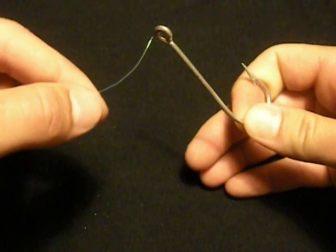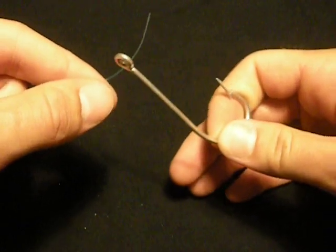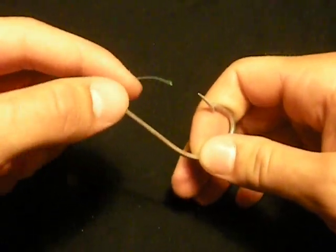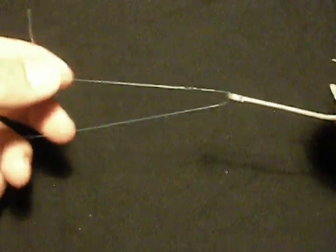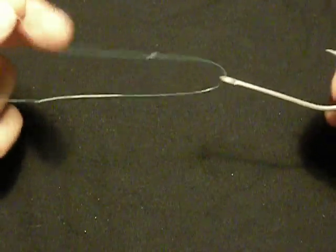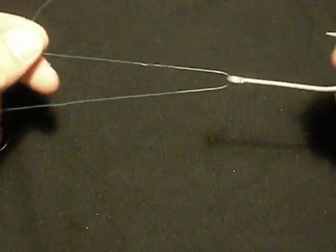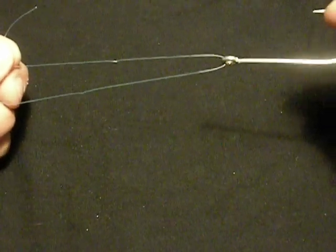You want to run this tag end of your line through the eye of your hook bringing out approximately three to four inches. Then depending on line diameter, small lines require more, large lines require less.